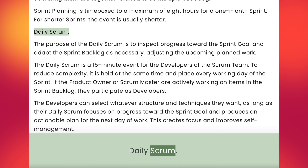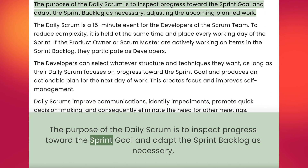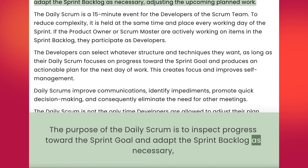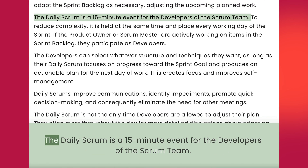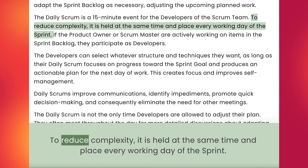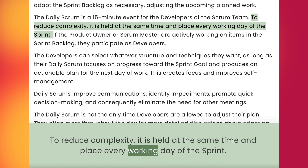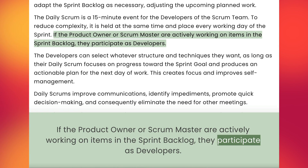Daily Scrum. The purpose of the daily scrum is to inspect progress toward the sprint goal and adapt the sprint backlog as necessary, adjusting the upcoming planned work. The daily scrum is a 15-minute event for the developers of the Scrum team. To reduce complexity, it is held at the same time and place every working day of the sprint. If the product owner or Scrum master are actively working on items in the sprint backlog, they participate as developers.